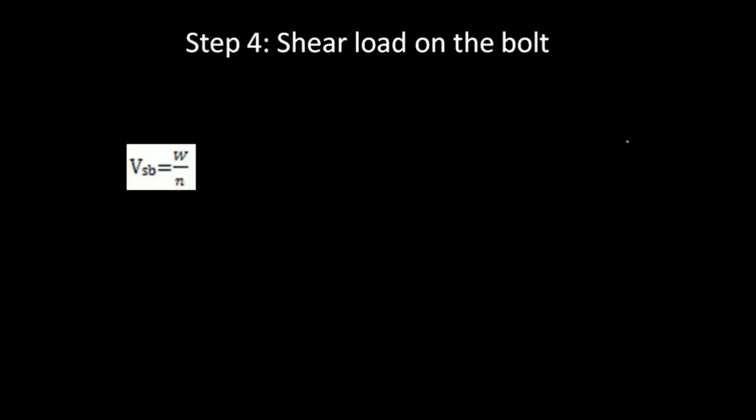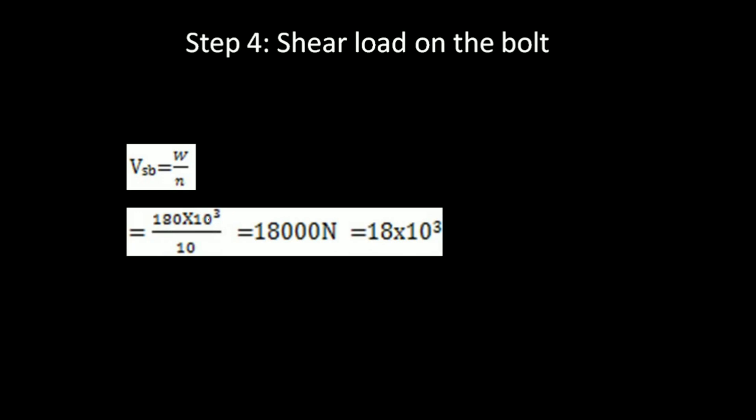Step 4: Calculate the shear load. The shear load is the total load divided by the number of bolts, W/N. The load W is 180 kN, so the shear load per bolt comes out to 18,000 N.